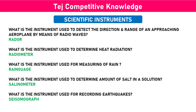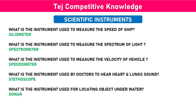What is the instrument used to measure rainfall? Rain gauge. What is the instrument used to determine the amount of salt in a solution? Selenometer. What is the instrument used to measure the speed of a ship? Selenometer. What is the instrument used to measure the spectrum of light? Spectrometer.